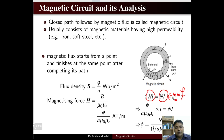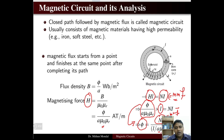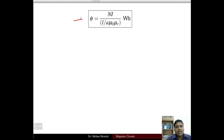Substituting the value of H = phi / (A · mu_0 · mu_r) and multiplying by length L gives phi / (A · mu_0 · mu_r) × L = N·I. Solving for flux: phi = N·I / (L / (A · mu_0 · mu_r)). Here N·I is the MMF and the denominator L / (A · mu_0 · mu_r) is the reluctance S. So flux equals MMF divided by reluctance S, where S = L / (A · mu_0 · mu_r).